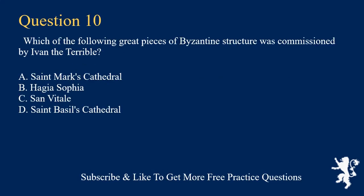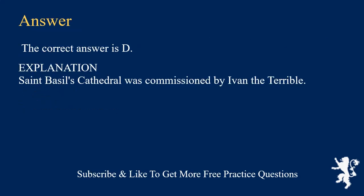Which of the following great pieces of Byzantine structure was commissioned by Ivan the Terrible? A. St. Mark's Cathedral. B. Hagia Sophia. C. San Vitale. D. St. Basil's Cathedral. The correct answer is D.